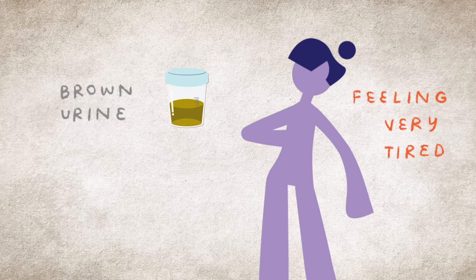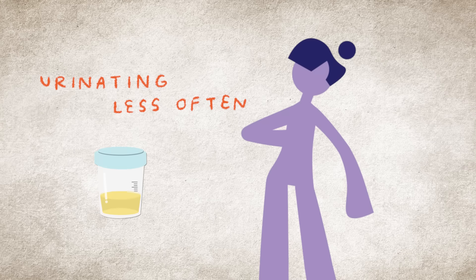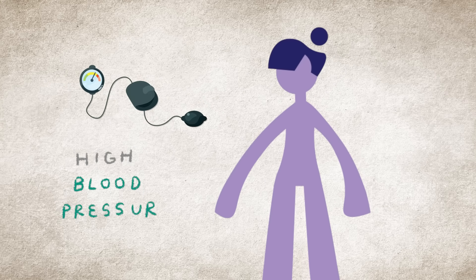Brown urine caused by blood, foamy urine caused by protein, urinating less often than normal, and high blood pressure.